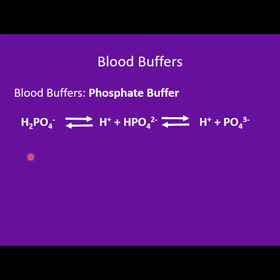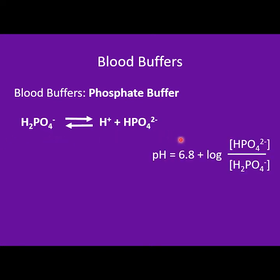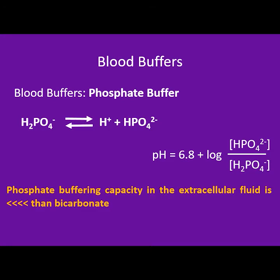Phosphate is an extracellular buffer with two protons, existing in a diacid form, a monoacid form, or a basic form. The pKa of this reaction is 6.8, which is closer to 7.4, and one might think it is a better buffer than carbon dioxide-bicarbonate. However, there is more carbon dioxide-bicarbonate than phosphate in extracellular fluid, so the buffering capacity of phosphate is less than that of bicarbonate.